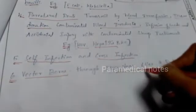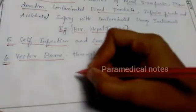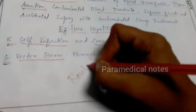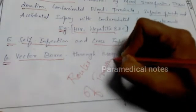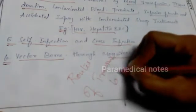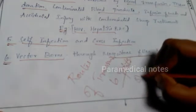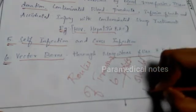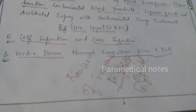The fifth point under routes is self-infection, related to the endogenous category mentioned earlier — you can write that explanation here too. The sixth route is vector-borne transmission through mosquitoes, flies, and rats. You should write all six points of routes of transmission.